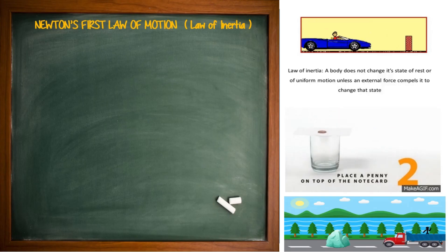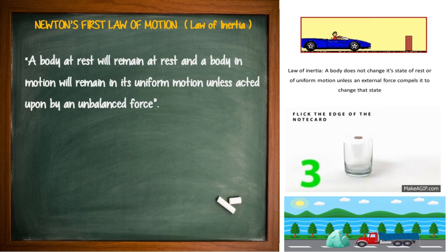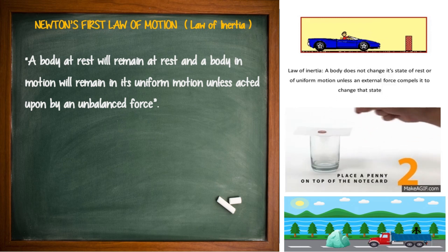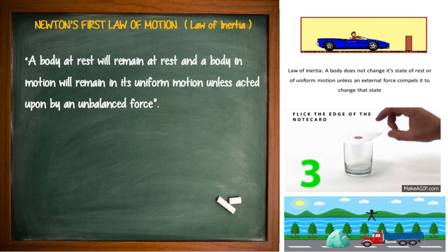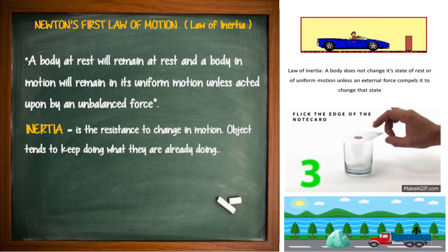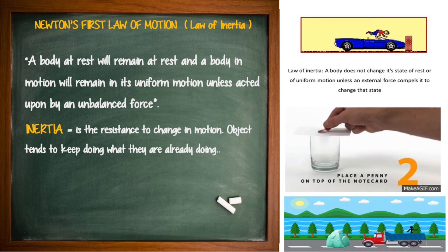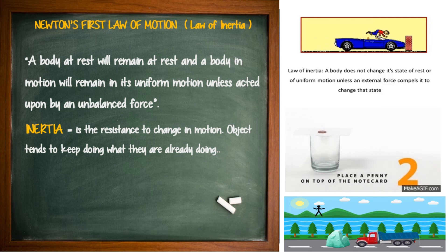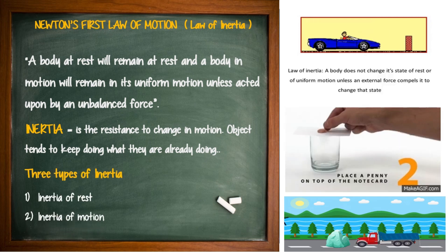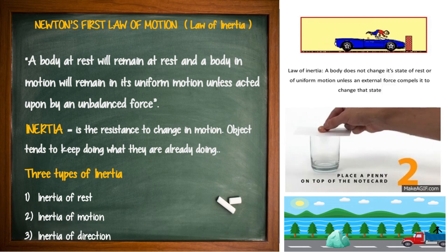Newton's first law of motion: the law of inertia. A body at rest will remain at rest, and a body in motion will remain in its uniform motion unless acted upon by an unbalanced force. Inertia is the resistance to change in motion. Objects tend to keep doing what they are already doing. There are three types of inertia: inertia of rest, inertia of motion, and inertia of direction.